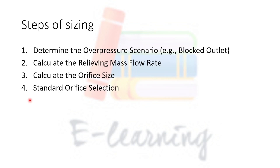In today's short video tutorial we are going to discuss the process of sizing a pressure safety valve. These are the four main steps of sizing a PSV. In the first step we determine the overpressure scenario on which we design the PSV. Then we calculate the relieving mass flow rate. The third step is the calculation of orifice size, and after that we select the standard orifice for the PSV.